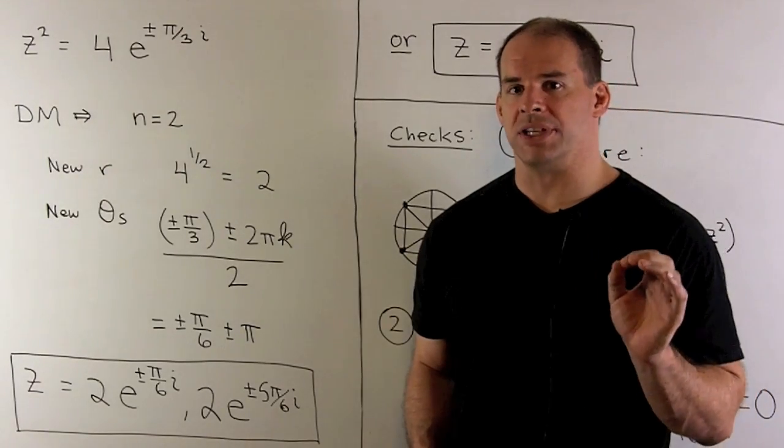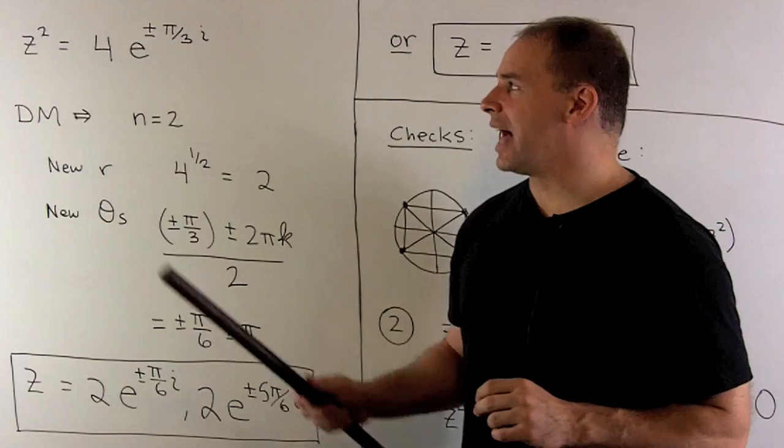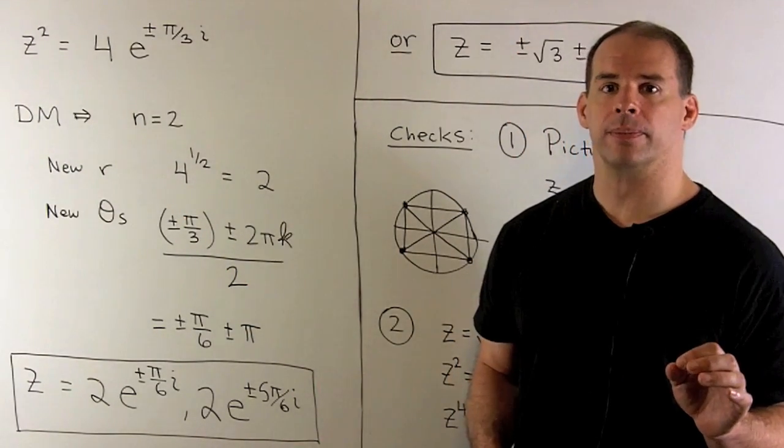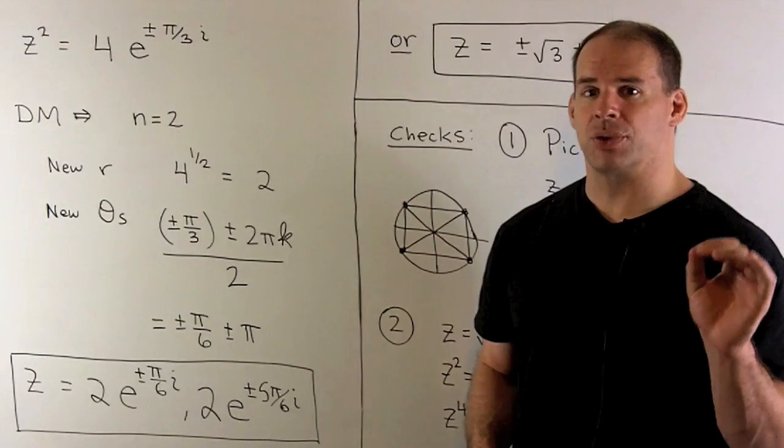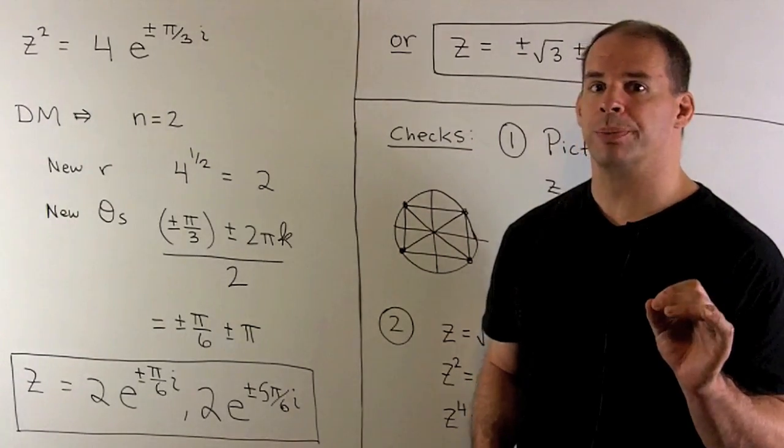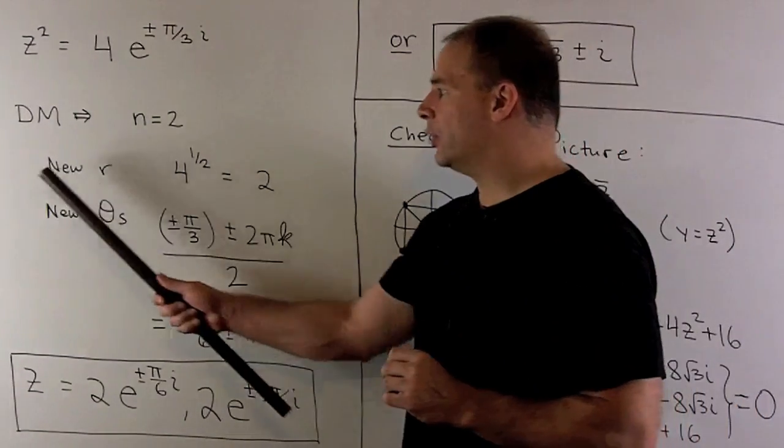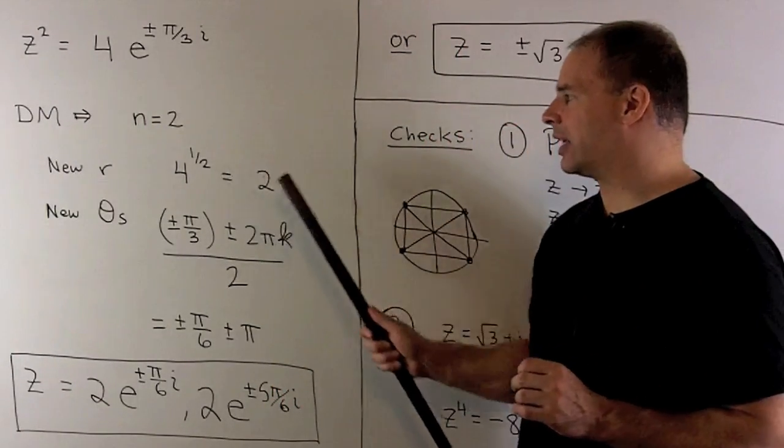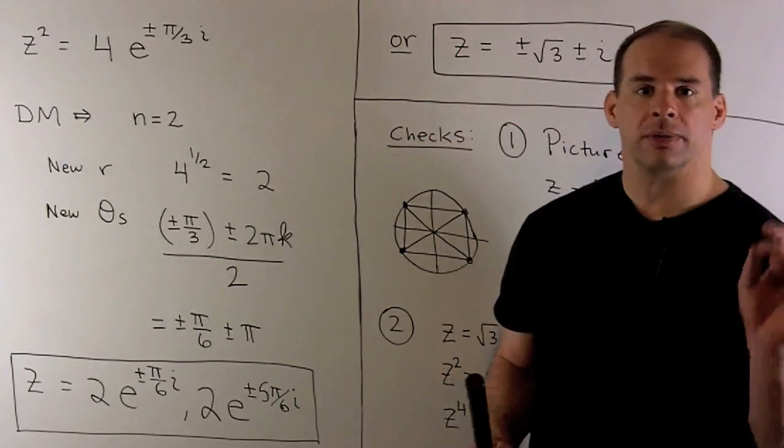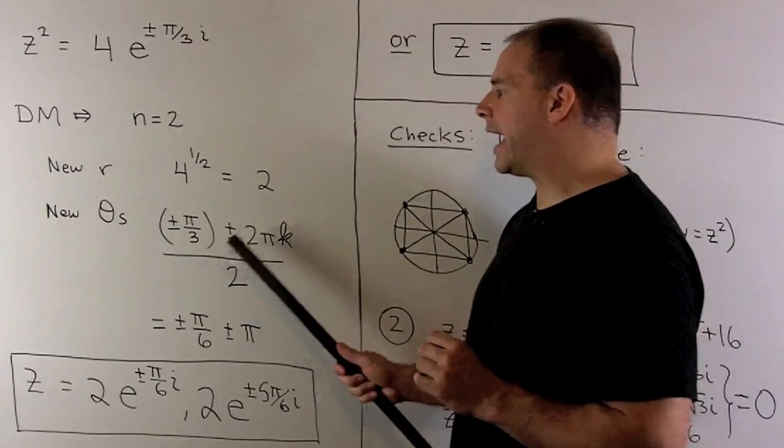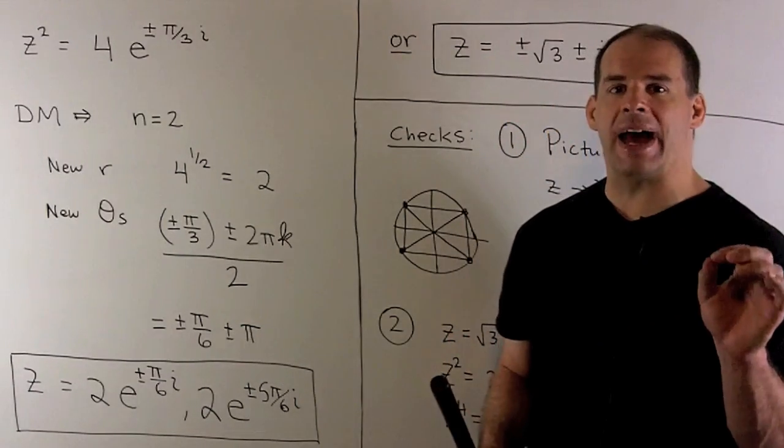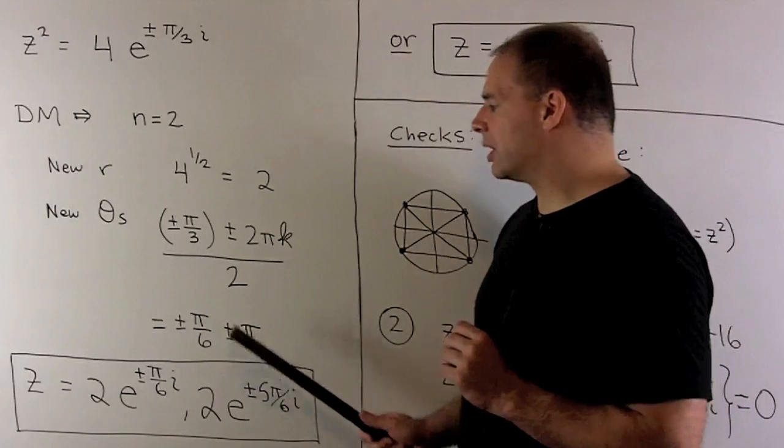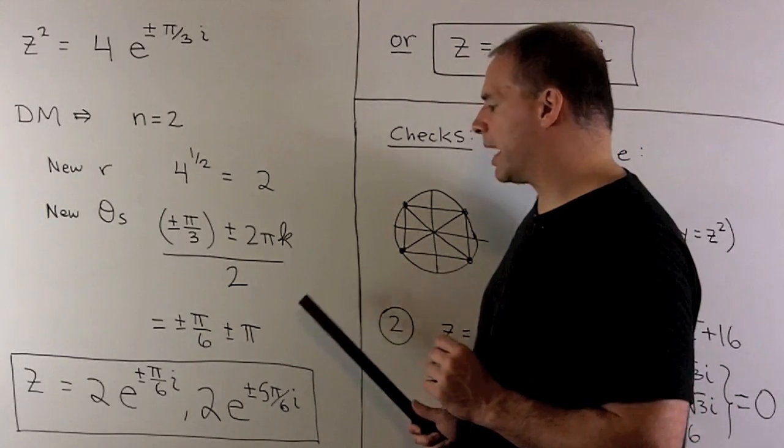If we replace y with z-squared, we're now trying to solve z-squared equals 4 times e to the plus minus pi-thirds times i. De Moivre's theorem gives us the recipe for computing the square roots. So the new modulus, we're going to take the square root of the old modulus, so that'll give us a 2. For the new angles, we take our old angles, we add all multiples of 2 pi, and then we divide by 2. So that's going to give us plus minus pi-six plus minus pi.